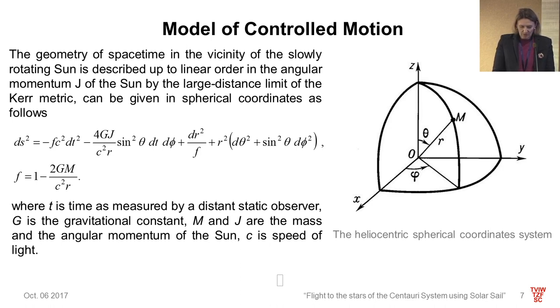The geometry of space-time in the vicinity of the slowly rotating sun is described up to linear order in the angular momentum of the sun. By the large distance limit of the Kerr metric can be given in spherical coordinates as follows. Here, T is time as measured by a distant static observer. M is the mass of the sun, and J is the angular momentum of the sun. When the angular momentum equals zero, this metric reduces to the Schwarzschild metric, which describes the exterior space-time of a spherical and non-rotating sun. Due to the second term in the metric, the rotating sun should exhibit frame dragging. To maximize frame dragging effect, let us consider the trajectory of the spacecraft that lies within the equatorial plane of the sun.